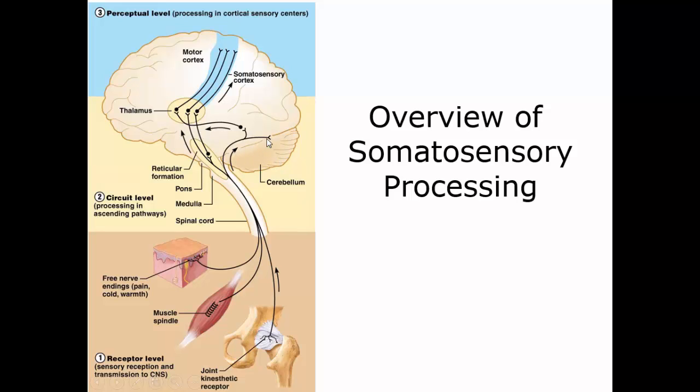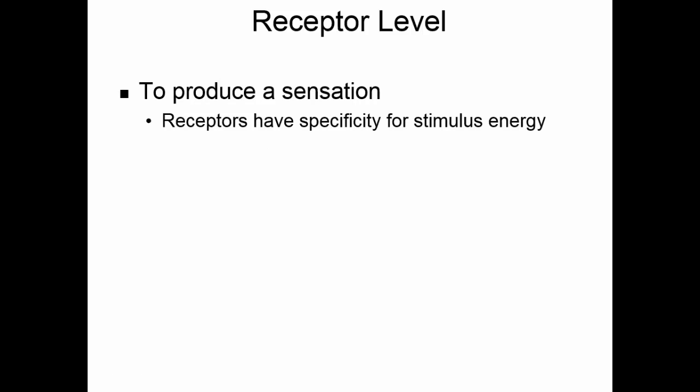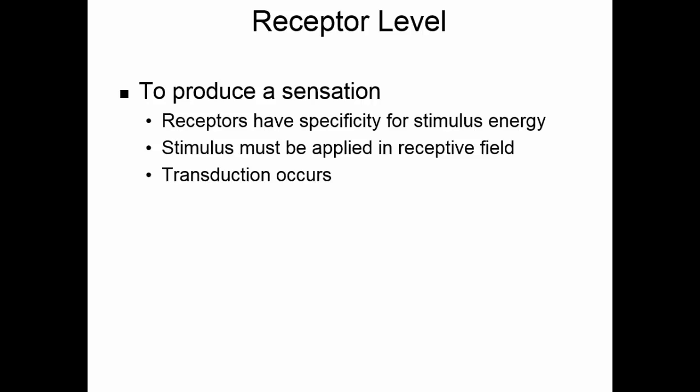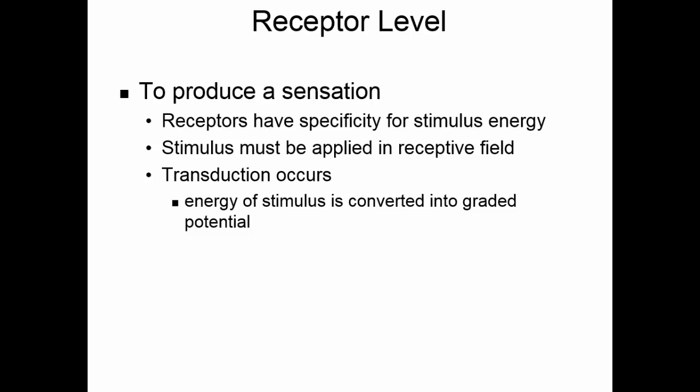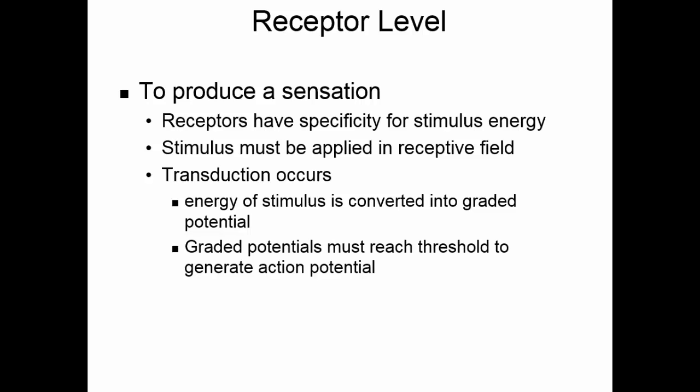In order to produce a sensation, we have to have two things: receptors in the area that are specific for that stimulus — pressure receptors won't pick up temperature changes, for example — and we have to have the stimulus applied in the receptive field for that receptor. The stimulus has to be close enough to the receptor that it picks it up. Once the stimulus is picked up, transduction occurs: the stimulus energy is converted into a graded potential on the receptor and the dendrites of the receiving nerve. These graded potentials have to reach threshold to generate an action potential at the axon hillock of the first-order neuron, which then carries the information to the central nervous system.